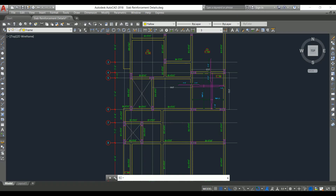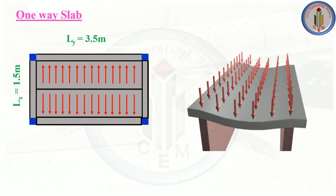First, let's start with the behavior of slabs. We have one-way slab and two-way slab. When the load is applied on a one-way slab, the slab bends like this. The load distribution happens such that the shortest span is the bending direction. In one-way slab it bends in the shorter direction, and the load is divided into half and transferred to the beams.